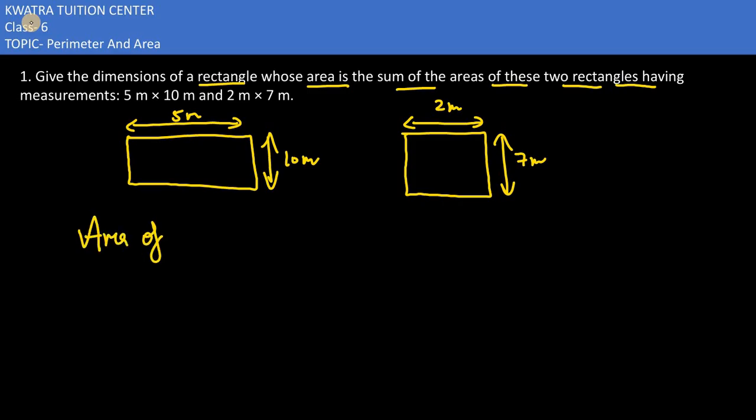So what will happen here? Area of rectangle 1 is there which is 5 into 10. This would give you 50 meter square.